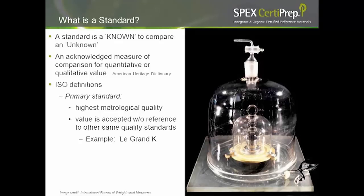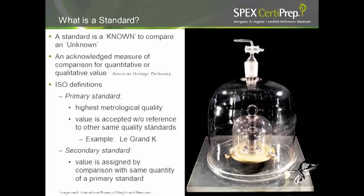The classic example has been the Grand K, or the Grand Kilogram, which was the primary standard of the kilogram housed in the International Bureau of Weights and Measures outside of Paris. Secondary standards have values assigned by comparison with the same quality and quantity of a primary standard. There is a national measurement institute for each country under primary standards — in the United States it is NIST, in Canada it is NRC, and in the United Kingdom it is NPL. Your CRMs would fall under secondary standards related to primary standards.